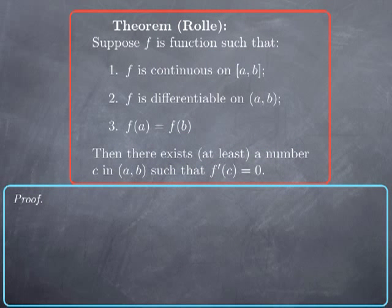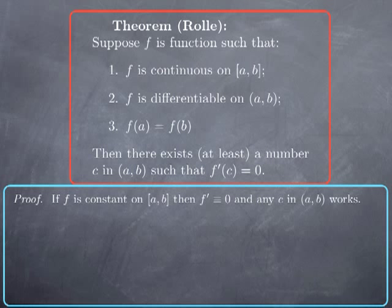Let's try to prove this result. Even though it is quite clear from pictures that it ought to be true, we are in a position to justify it more formally. The first observation is that if the function is constant on the closed interval — which is possible since we have the same values at the endpoints — then the derivative is identically zero on the open interval (a,b), and therefore any value we pick in the open interval returns a derivative of zero. In that case, there would be infinitely many possibilities for c.